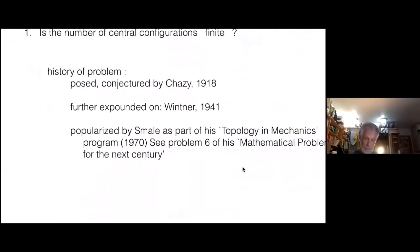For N equals 3, for the three-body problem, Euler and Lagrange found them all. There were the two solutions of Lagrange, and the three of Euler. So again, the question is, is the number of central configurations finite? A little bit of history of the problem. This is essentially stolen from our historian, Alain Albouy, a great historian of the N-body problem. Chazy in 1918 asked this question. Wintner expounded on it and referenced Chazy. Smale popularized it in the 1970s.